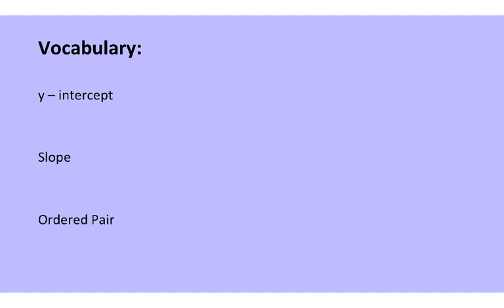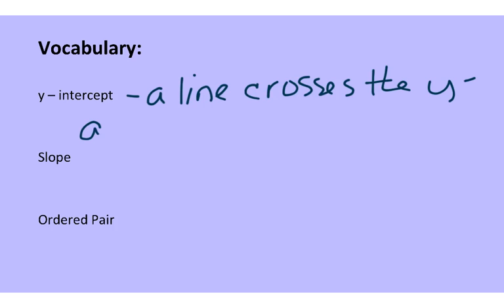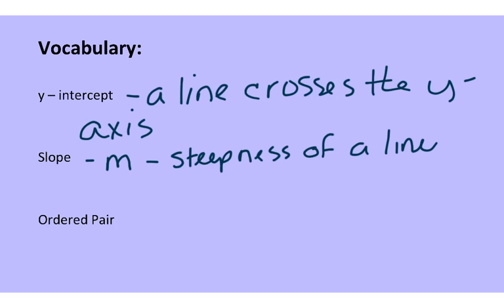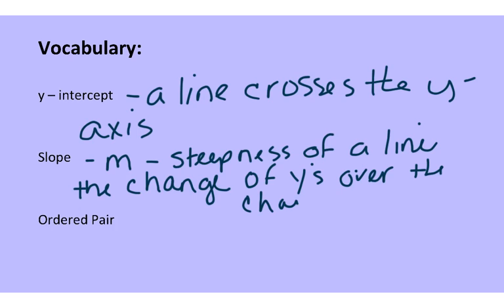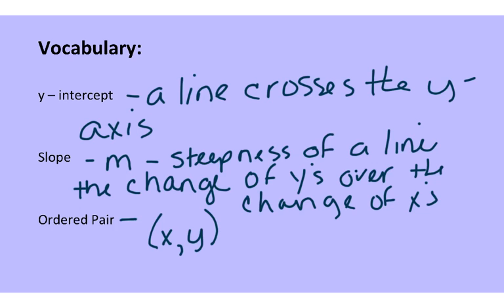Just a really quick review. The y-intercept is where a line crosses the y-axis. The slope — remember we call it m — is the steepness of a line. It's the change of y's over the change of x's. An ordered pair is a set of coordinates that go on the coordinate grid, set up with the x first and the y second. You can find ordered pairs from a table.